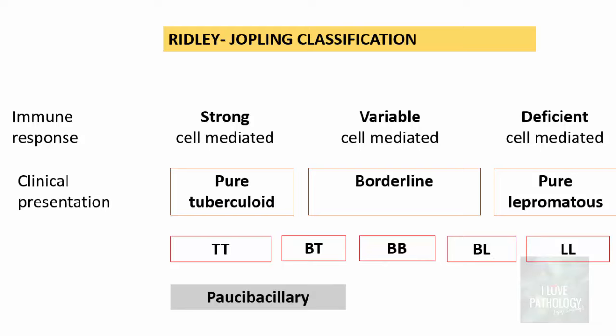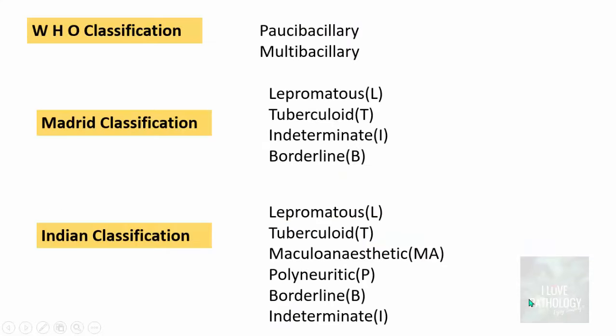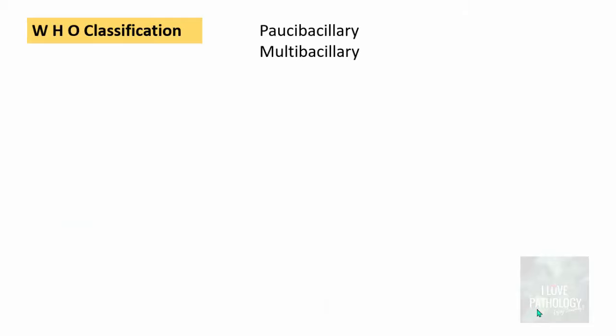According to the WHO classification, leprosy is classified as paucibacillary and multibacillary type. Paucibacillary means absence of bacilli on the slit skin smear — smear negative leprosy — whereas smear positive is multibacillary. TT and BT types fall under paucibacillary, while BB, BL, and LL fall under multibacillary. Clinically, paucibacillary leprosy is defined by five or fewer lesions, while more than five lesions indicates multibacillary type.